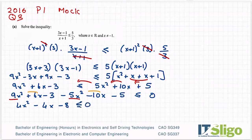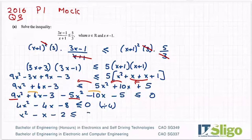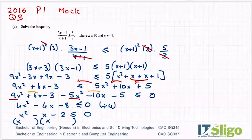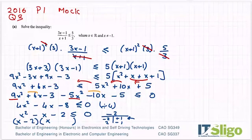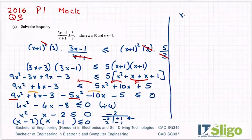I'm going to divide across by 4 to make the quadratic easier to factorize. That gives x² − x − 2 ≤ 0. Splitting x² into x and x, and finding factors of −2 that add to −1: that's −2 and +1. So we get (x − 2)(x + 1) ≤ 0.